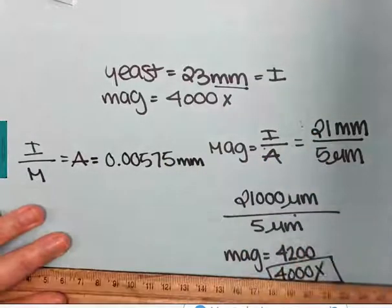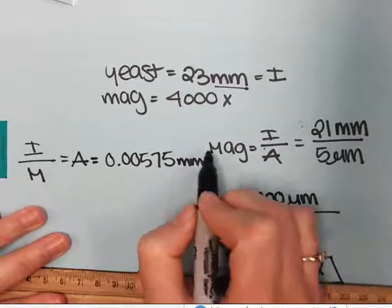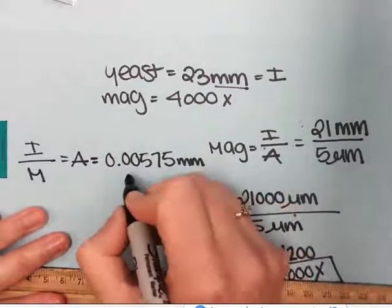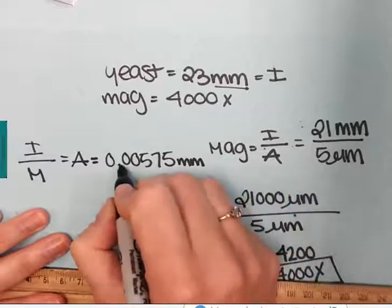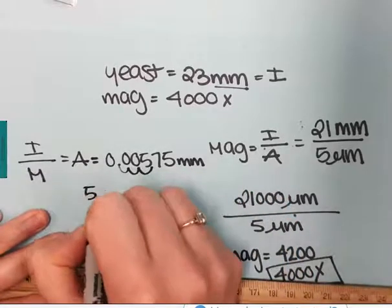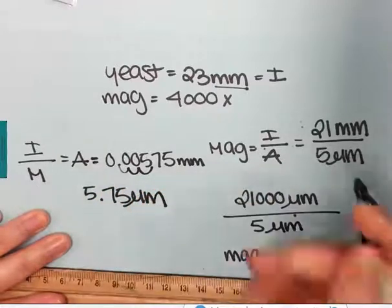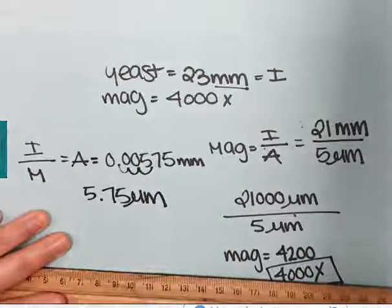If I want to put that in micrometers, remember there's a thousand micrometers in a millimeter, so I'm going to the smaller unit. I need to make this bigger: one, two, three. 5.75 micrometers.